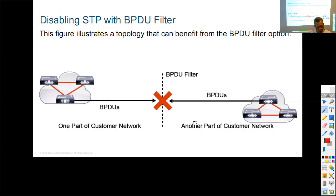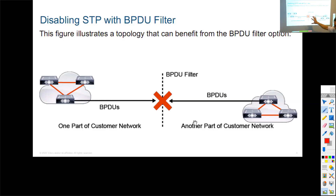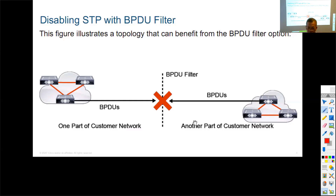One more thing: any given switch can belong to one spanning tree domain only. If you have two domains and you want to segregate them from each other — even if you control both — you can use BPDU Filter to prevent them from interchanging spanning tree information.